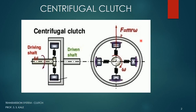Now let's understand the construction of this centrifugal clutch. Here you can see a front view and a side view. In the side view, you can observe that there are two shafts — this particular shaft is called the driven shaft and this one is called the driving shaft. The driving shaft is connected to the engine and the driven shaft is connected to the gearbox. On the driving shaft, we have connected a spring and various pads called clutch pads or clutch friction material.